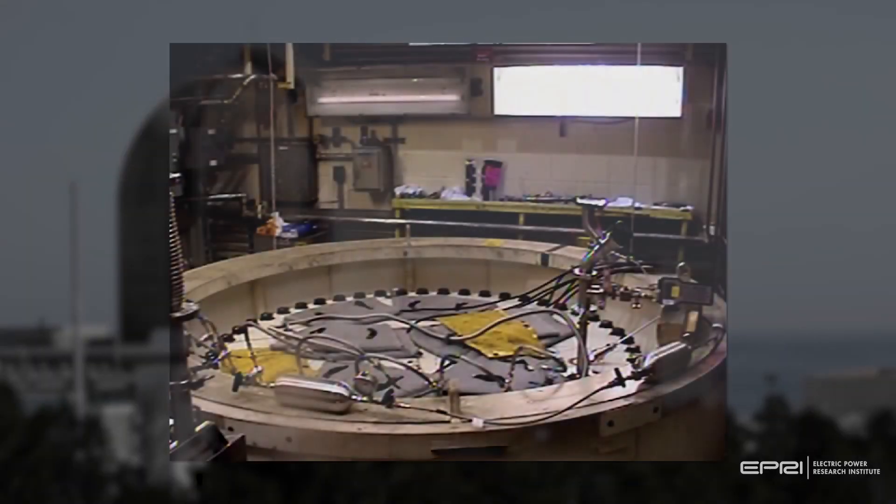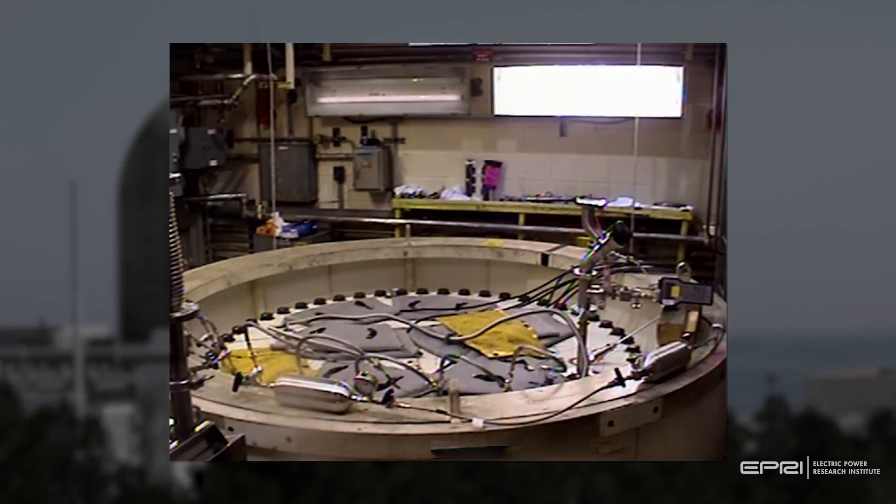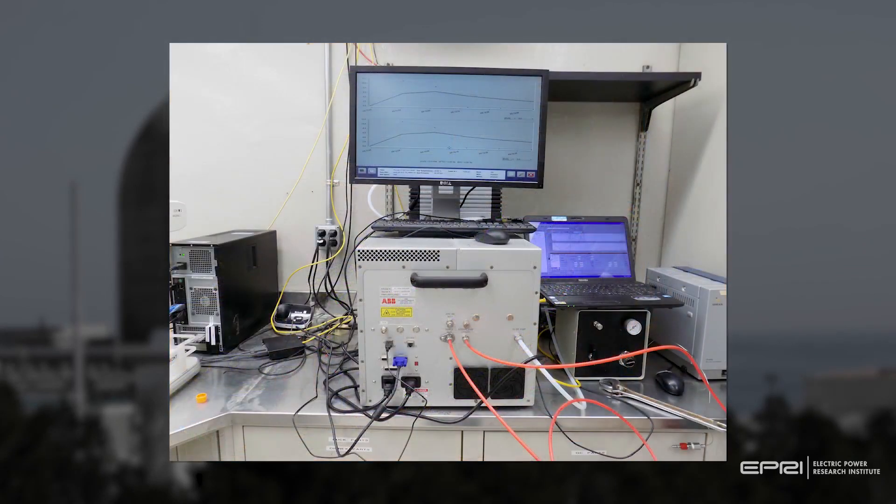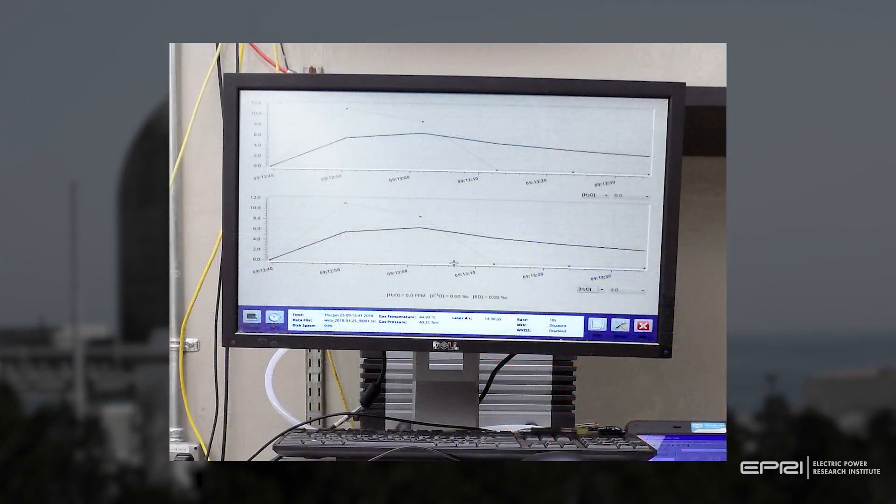The team also collected gas samples from the cask interior at three different times following vacuum drying for laboratory analysis to detect if any fuel rods were breached during the drying process and gain additional information on the effectiveness of the drying process.